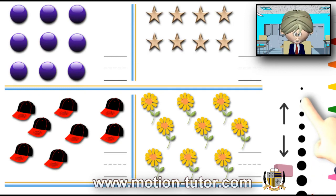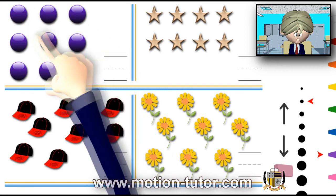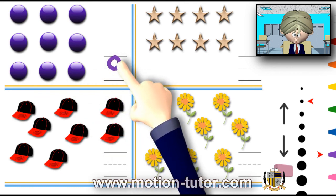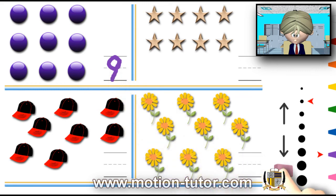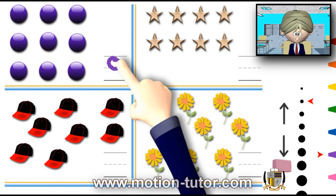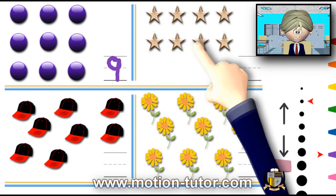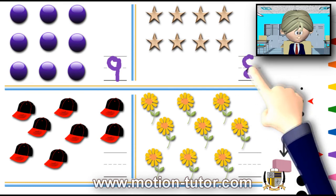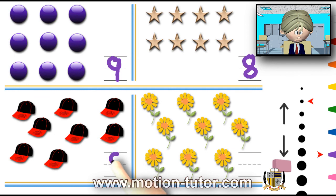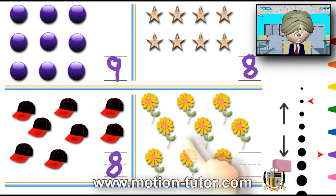Now, we'll count the objects and write the numbers. Let's count: 1, 2, 3, 4, 5, 6, 7, 8, 9. So, that's a 9. Another way you can write 9 is like this — just like that. 1, 2, 3, 4, 5, 6, 7, 8. 1, 2, 3, 4, 5, 6, 7, 8. 1, 2, 3, 4, 5, 6, 7, 8.